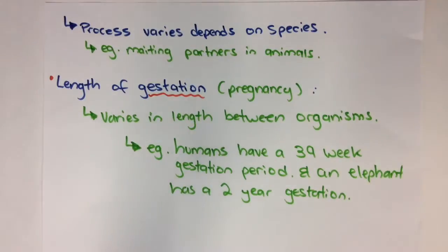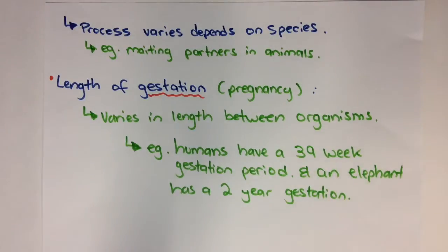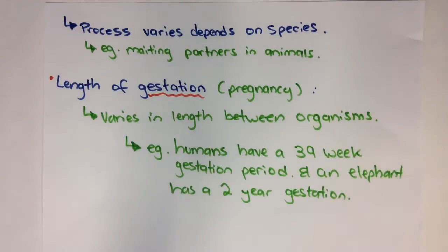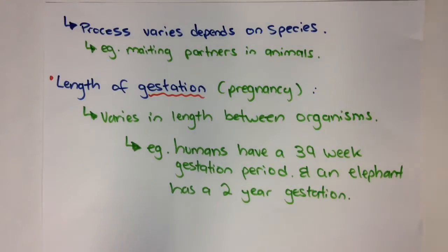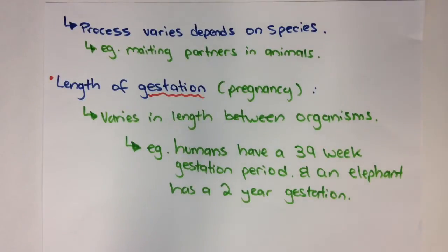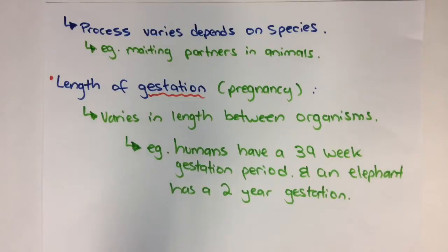Two examples: falcons and birds of prey mostly have only one mating partner for their whole life, whereas a cat found only in Madagascar behaves differently — when it's ready to breed, the female will often mate with a number of males so that the chances of her egg being fertilized are increased. It's quite interesting how these processes vary depending on species.